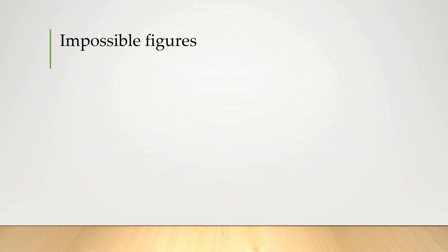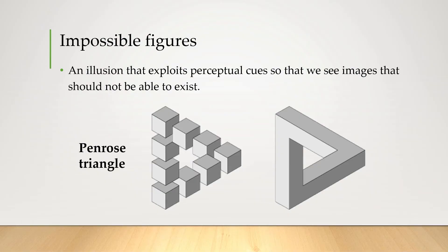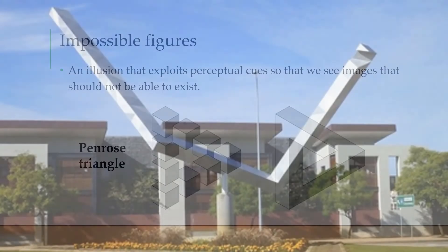Next we're gonna look at impossible figures. This is an illusion that exploits perceptual cues so that we see stuff that should not be able to exist. A classic example is the Penrose triangle. Yeah, I don't even really need to explain that do I? The thing is, since we're using a 2D image to represent a 3D object, we can actually use all sorts of visual cues against each other.